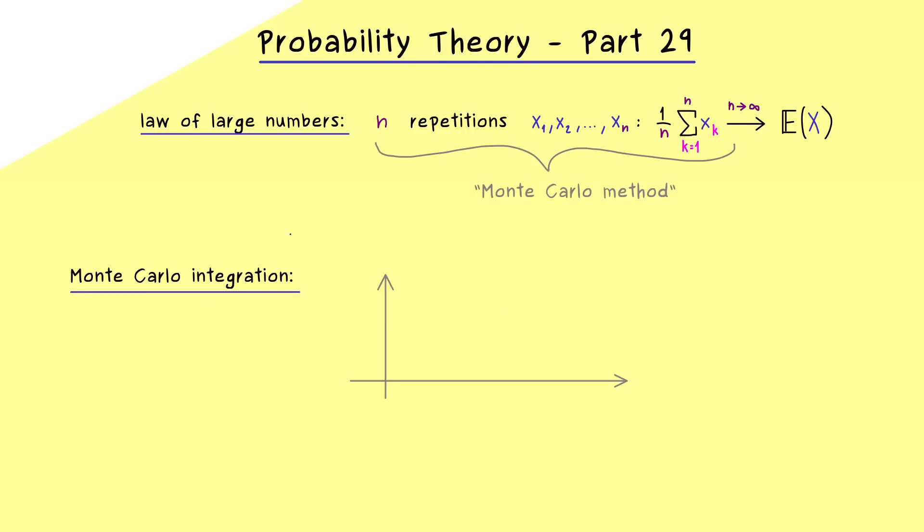This means we have the graph of a function and we want to calculate the area between the graph and the x-axis. And in order to keep it simple let's say that we have the function defined on the unit interval. Hence we will just integrate from 0 to 1. And you know this integral is just represented by the area here.